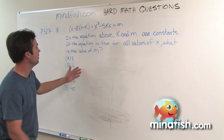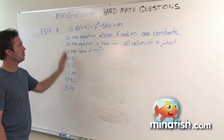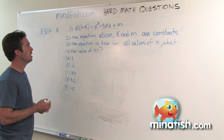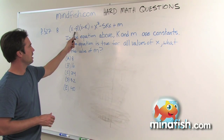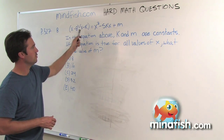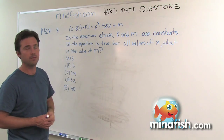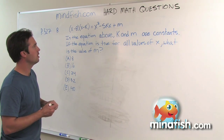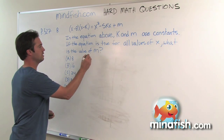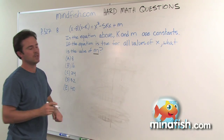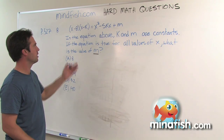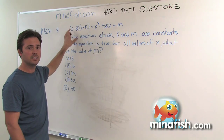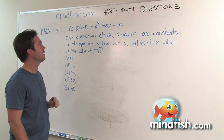This question is essentially asking us if we understand a quadratic equation, and specifically how to go from a factored form — foiling — to a more standard quadratic form. We're looking for the value of m. I call these problems quadratic equivalents. These two expressions are equal, so what we want to do is get them into a form where they look the same.